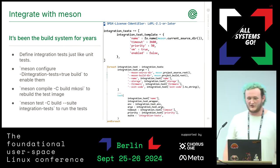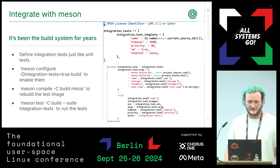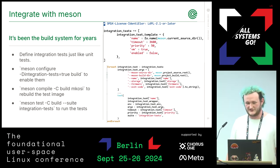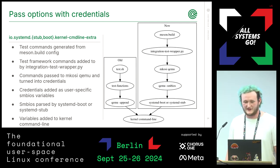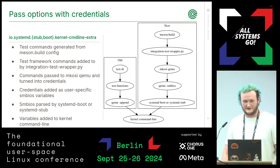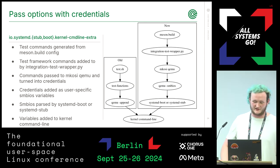To make things as simple as possible for current developers, we chose to use Meson to define the integration tests. This allows defining integration tests the same way that unit tests are defined. On the top right, you can see Meson code for defining an integration test, and on the bottom right, the top-level Meson config for running the integration tests. Tests can also run without a disk image or a bootloader and can use direct kernel boot, so -append could still be used, with credentials passed as part of the appended kernel command line.